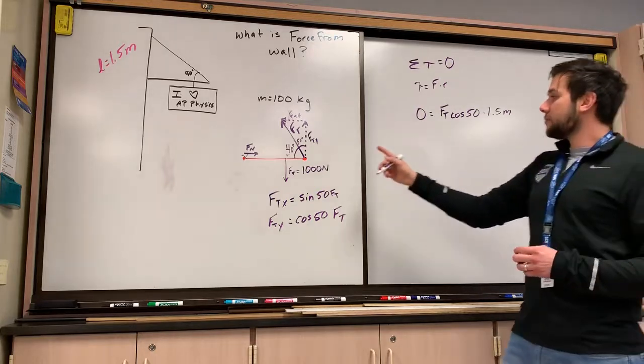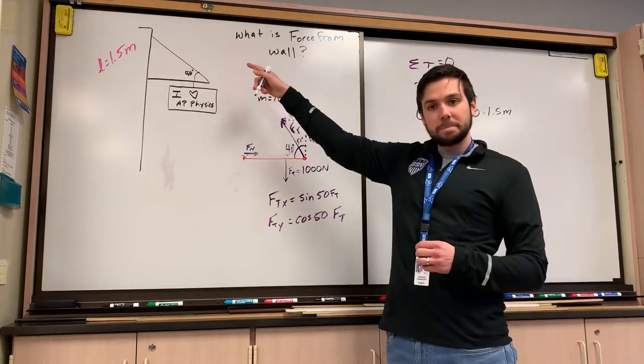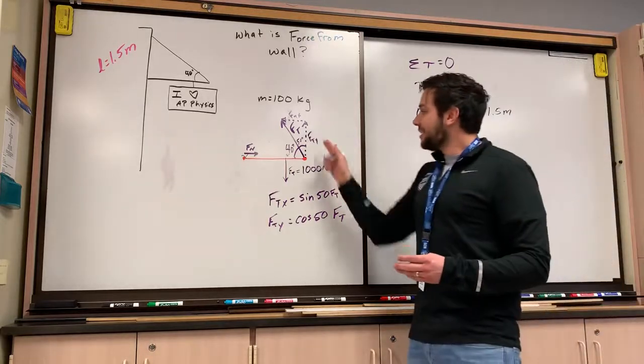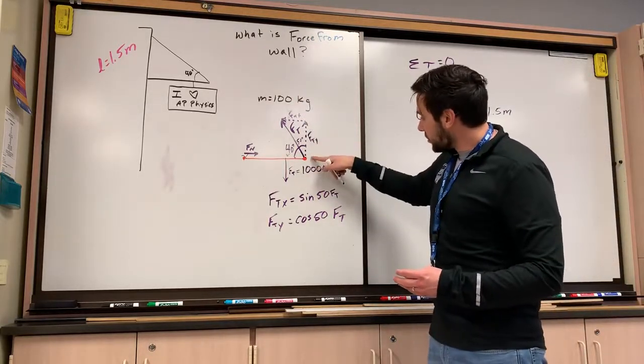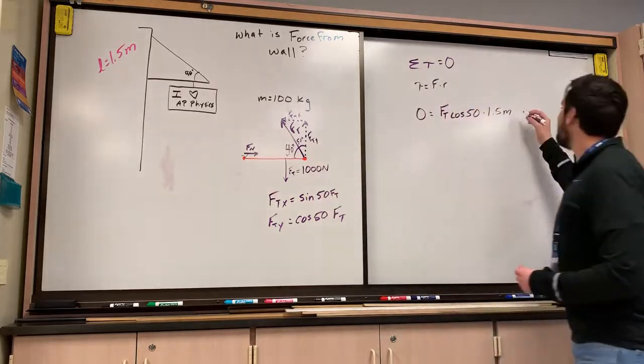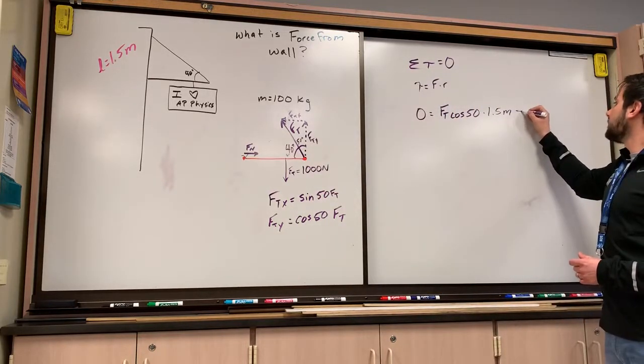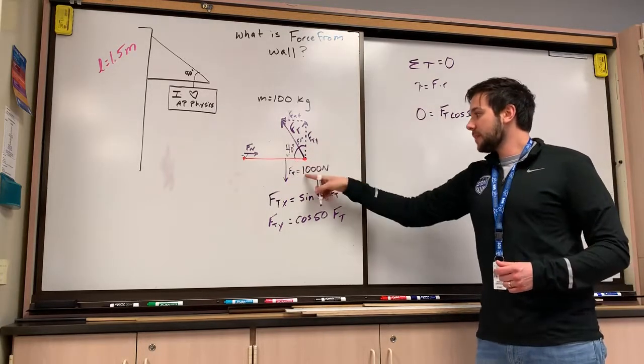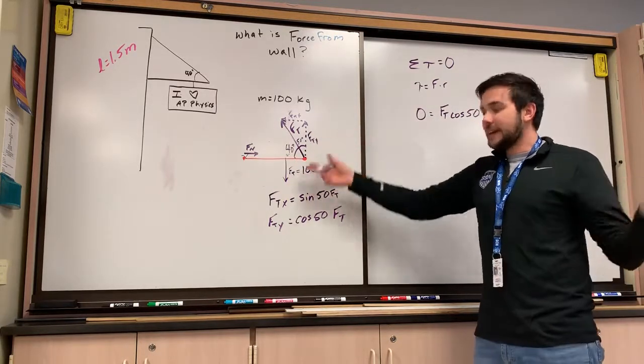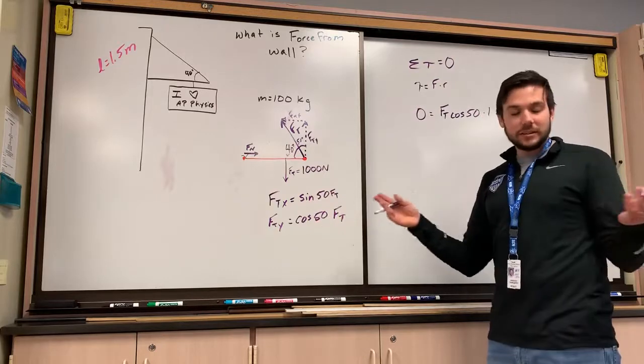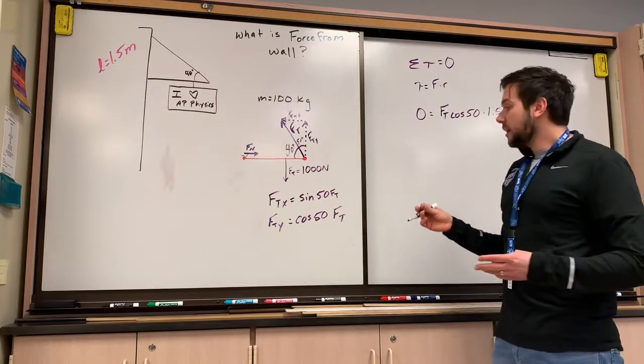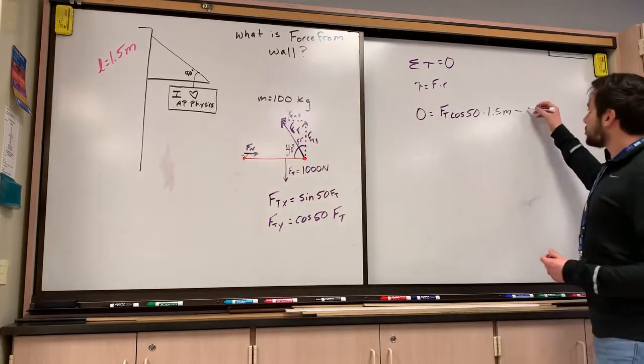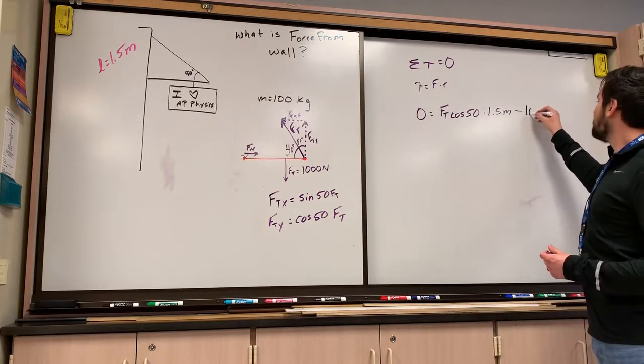Now, that's the force that's pulling it up. The force that's pulling it, sorry, I shouldn't say up. I should say it's pulling it counterclockwise. There's also a force pulling it clockwise. And that is the force of tension opposing that rotation. So we're going to say that that's a negative rotation. You can set it as an arbitrary distinction. But we're going to say that's the negative value. So we're going to subtract 1,000 newtons.